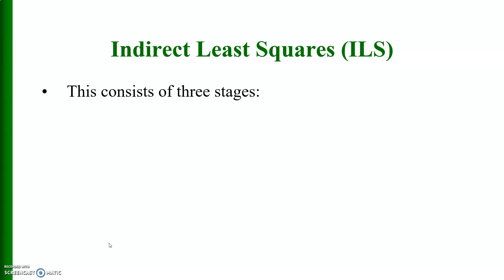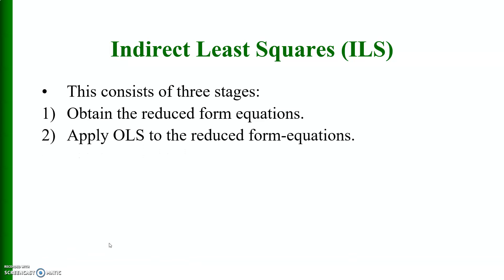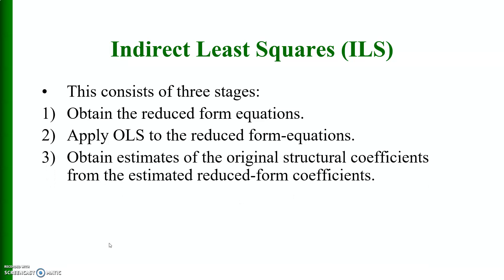Indirect least squares consists of three stages. The first stage means that we have to obtain the reduced form equations and then apply OLS to the reduced form equations. And finally, we have to obtain estimates of the original structural coefficients from the estimated reduced form coefficients. This approach assumes the original equations are exactly identified.